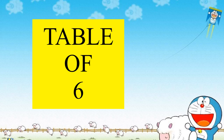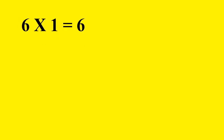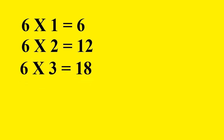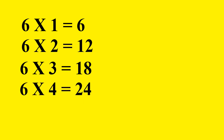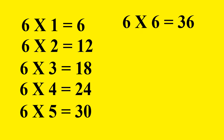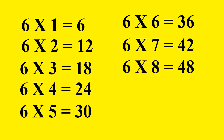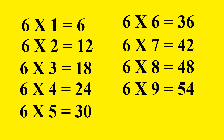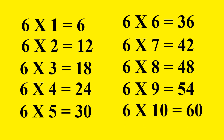Table of 6. 6 1s are 6. 6 2s are 12. 6 3s are 18. 6 4s are 24. 6 5s are 30. 6 6s are 36. 6 7s are 42. 6 8s are 48. 6 9s are 54. 6 10s are 60.